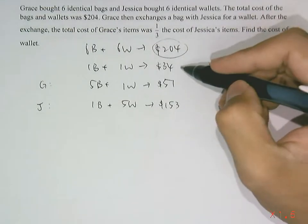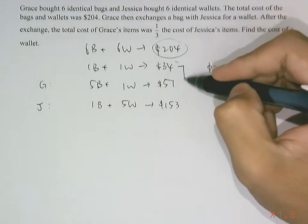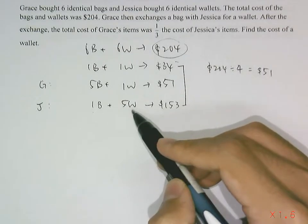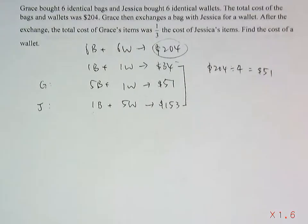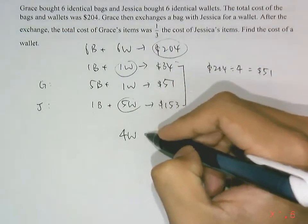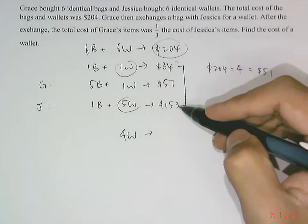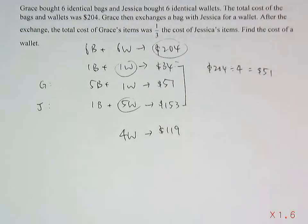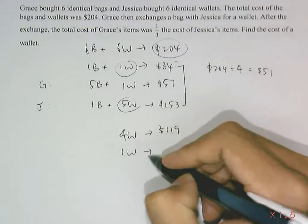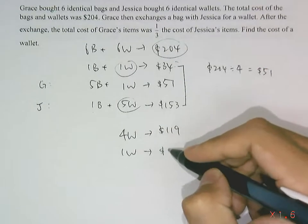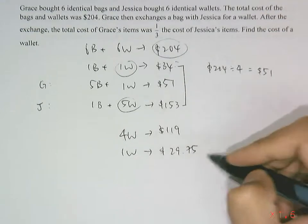Now we know this: if we compare 1 bag and 1 wallet, which is $34, and we compare 1 bag with 5 wallets, which is $153, we can easily tell the difference between them is 4 wallets, which equals $153 minus $34. So that will give $119 for 4 wallets. We can then find 1 wallet, which is what the question is asking for, to be $29.75.